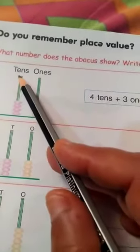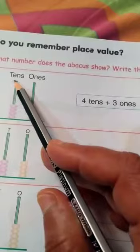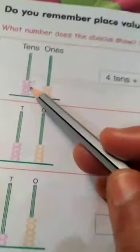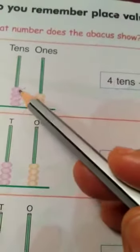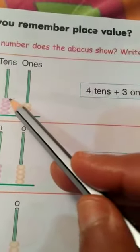Ones, tens. Now count the rings. How many rings in tens? 1, 2, 3, 4. We write here 4 tens.